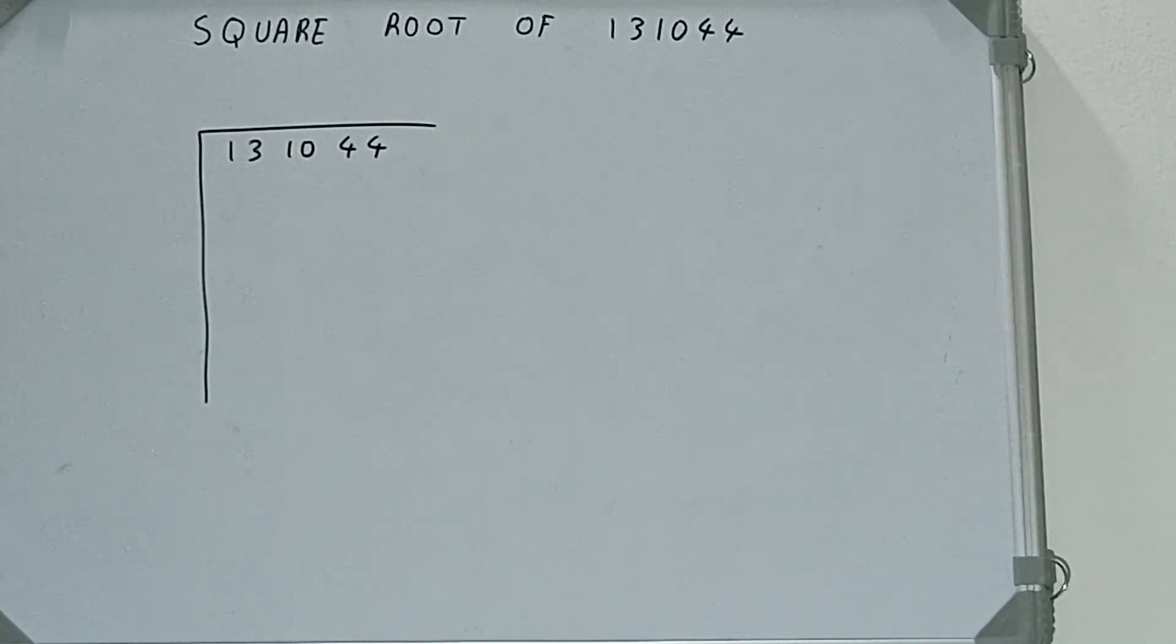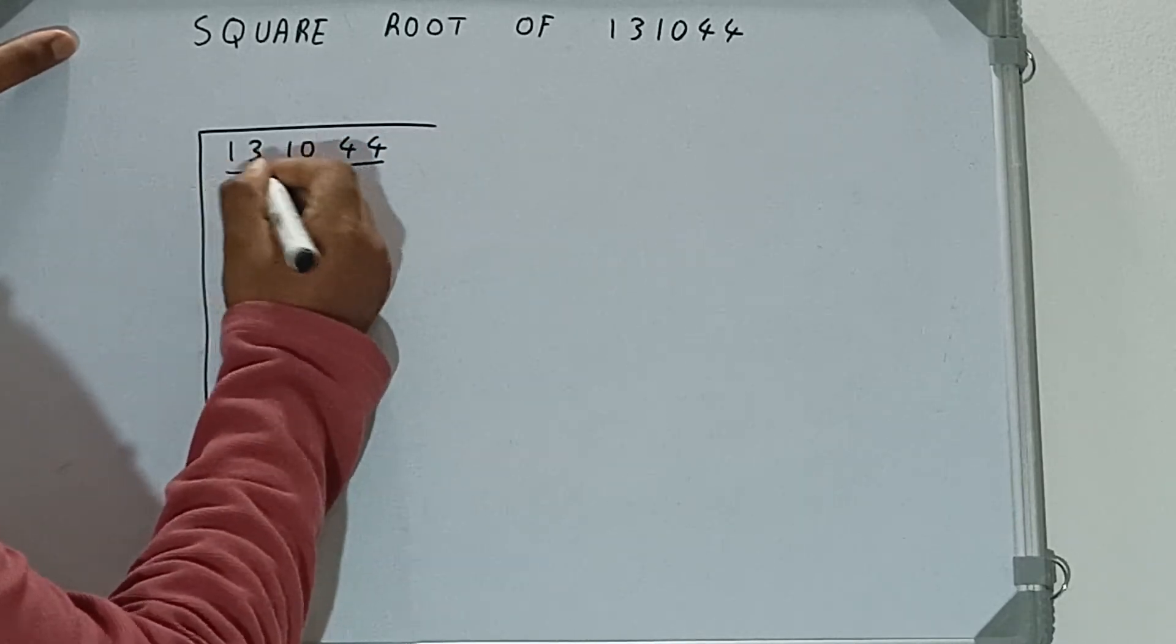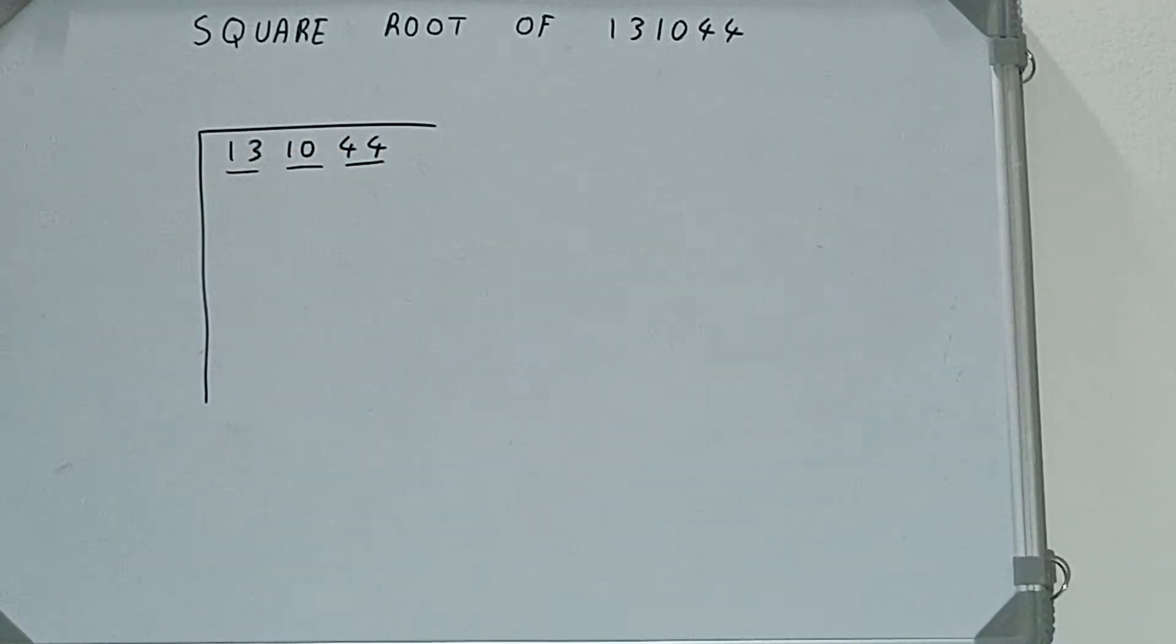Next thing we need to do is form pairs from the right-hand side. So one pair will be this, one pair will be this, and one pair will be this. Next thing we need to do is whatever number we write here, we need to write here also.